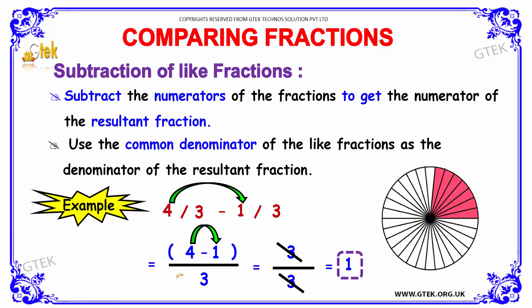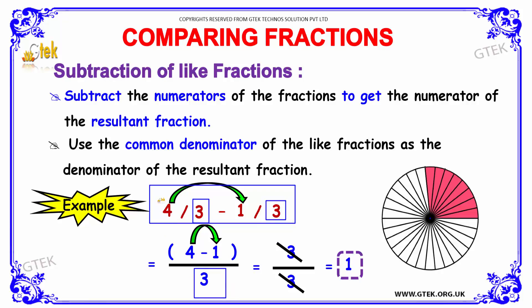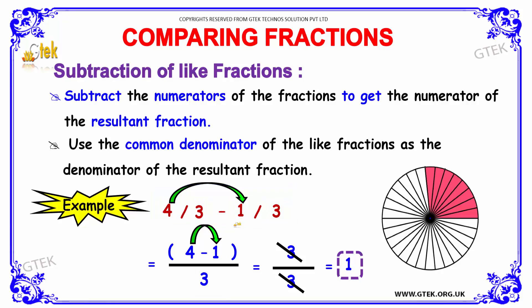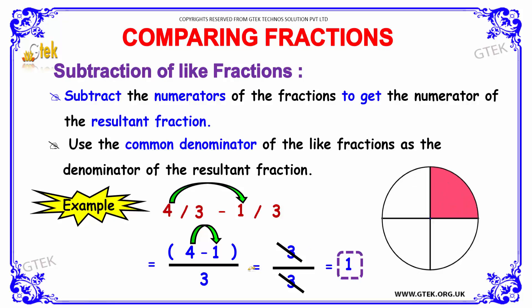We use the common denominator of the like fractions as the denominator of the resultant fraction. The question is 4 divided by 3 minus 1 divided by 3. Since we have the denominator common, we simply keep the denominator as 3. Subtracting the numerators: 4 minus 1 gives 3. So the numerator is 3 and the denominator is 3.